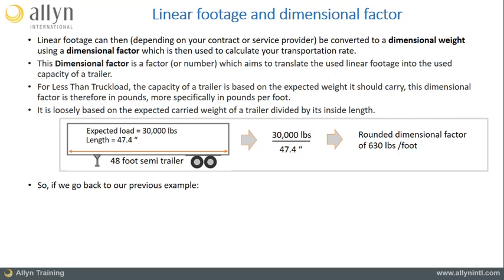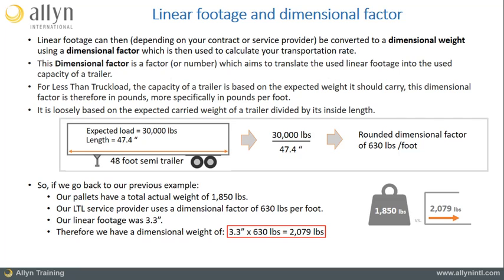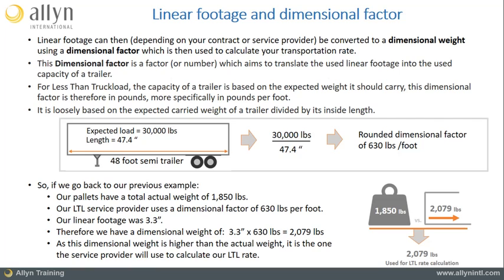Going back to our previous example, the pallets have a total actual weight of 1,850 pounds. Our provider uses a dimensional factor of 630 pounds per foot, and as our linear footage was 3.3 feet, we calculate the dimensional weight by multiplying 3.3 by 630, which gives us 2,079 pounds of dimensional weight. As this dimensional weight is higher than the actual weight, it is the dimensional weight that the service provider will use to calculate our LTL rate. We hope this brief video will have helped you familiarise yourself with linear footage and its calculation.